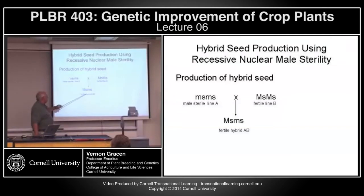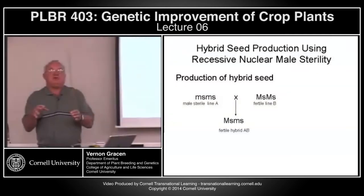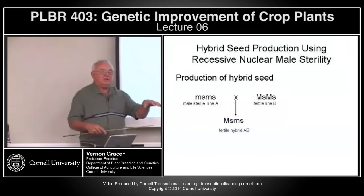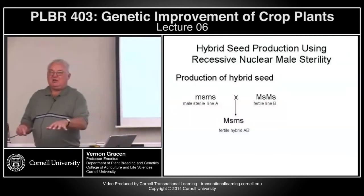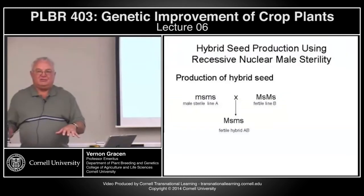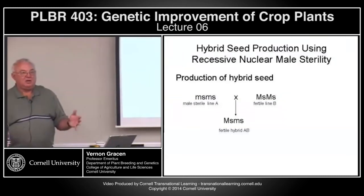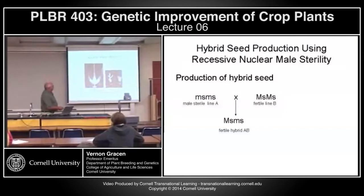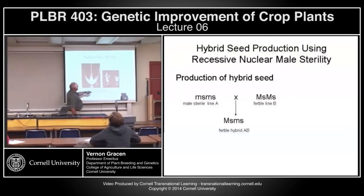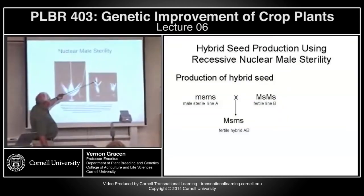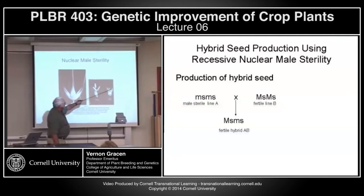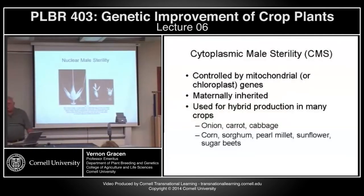In some brassicas, hybrid production schemes have been developed using genic male sterility because the seed value is high enough to justify manually or otherwise eliminating the male fertile plants segregating from the male sterile population before they flower. In barley, the difference is visible: plump anthers full of pollen grains versus little dried-up, shriveled anthers with no pollen inside.